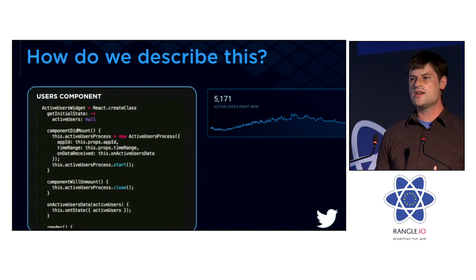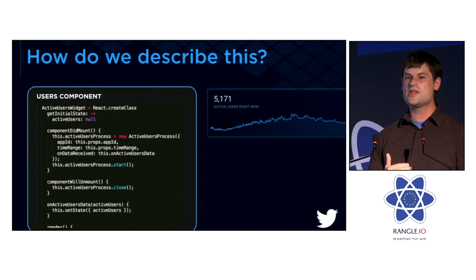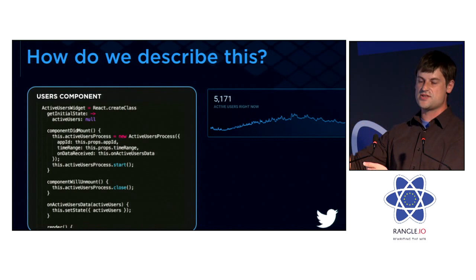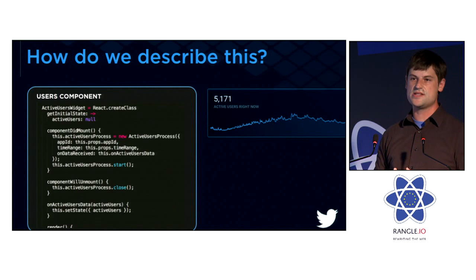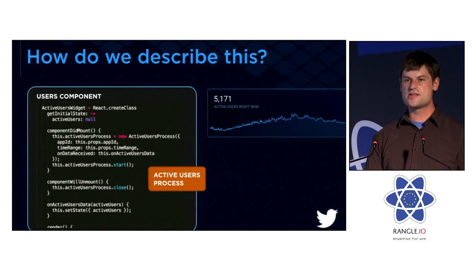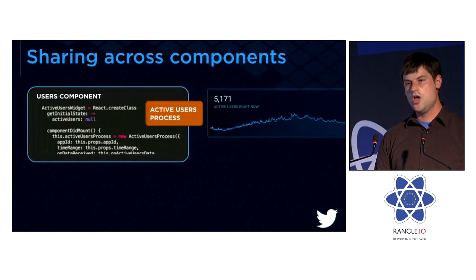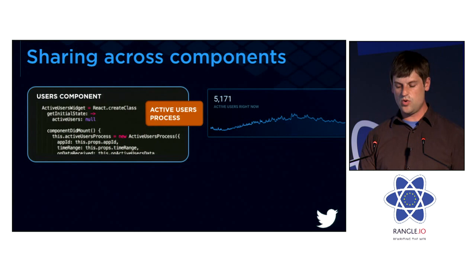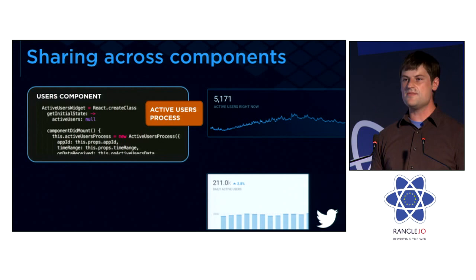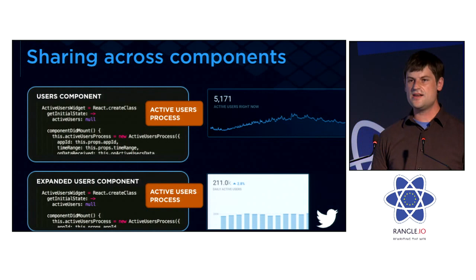The way we took a crack at solving this is basically having a component use React's awesome lifecycle hooks. When the component is mounted, we create a new process object that encapsulates communication with the server. That process object will emit data that the component can read back into its component state, and when the component unmounts, that process is stopped. It's very simple and explicit. We take the mechanics of how that process works and split that out into a class with a really clear API. When we look to share data across components, this design can still work — but if two components want different views of the same data, there's a real opportunity to optimize.